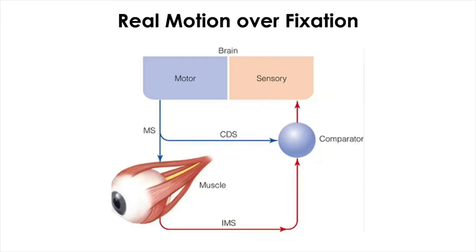Now, this time, there was a real movement over a fixation. You didn't move your eye, but then outside there's something moved. You didn't move your eye, so there's no motor signal and there's no copy of this signal sent to the comparator. But, at the retinal level, there was actually a motion of that object. So, the IMS is sent to the comparator. The net signal is IMS. So, there was a real motion detected.